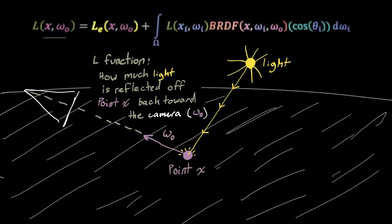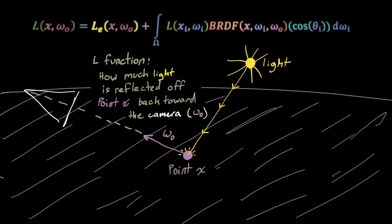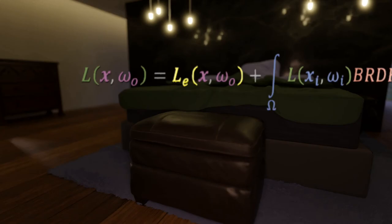So now for the rendering equation. The L for light on the left side of the equation is just a function that spits out the amount of light reflected back off point X in the direction of omega O, which typically points back to the camera. To calculate that, we first look at LE, the light emitted from that point. This will be a large number for lights and zero for most surfaces.